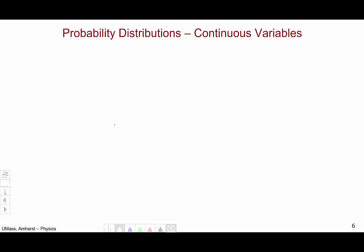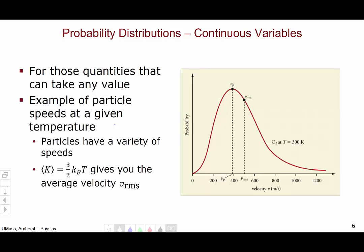Now let's think about probability distributions for continuous variables. Remember, continuous variables are those quantities that can take any value. An example of a continuous variable might be particle speeds at a given temperature.